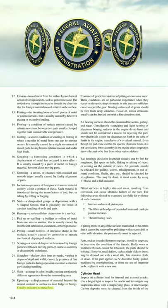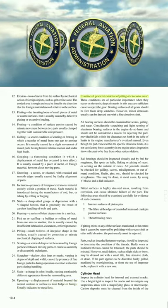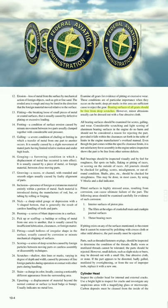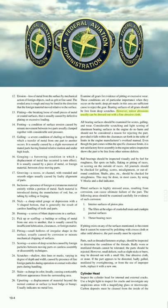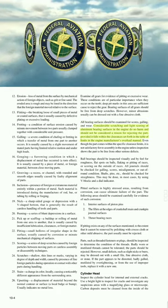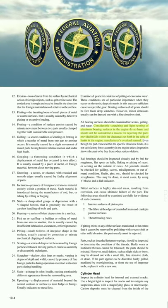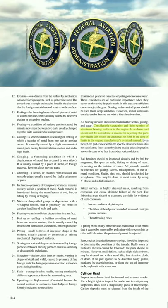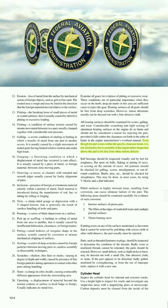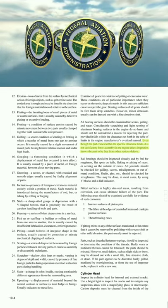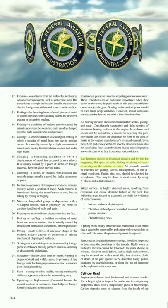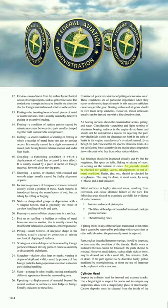Examine all gears for evidence of pitting or excessive wear, particularly on the teeth. Deep pit marks are sufficient cause to reject the gear. Bearing surfaces of all gears should be free from deep scratches; however, minor abrasions usually can be dressed out with a fine abrasive cloth. All bearing surfaces should be examined for scores, galling, and wear. Considerable scratching and light scoring of aluminum bearing surfaces does no harm and should not be considered a reason for rejecting the part, provided it falls within the clearances in the manufacturer's overhaul manual table of limits. All bearings should be inspected visually and by feel for roughness — flat spots on balls, flaking or pitting of races, or scoring on the outside of races. All journals should be checked for galling, scores, misalignment, or out-of-round condition.